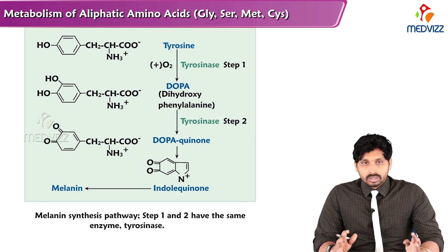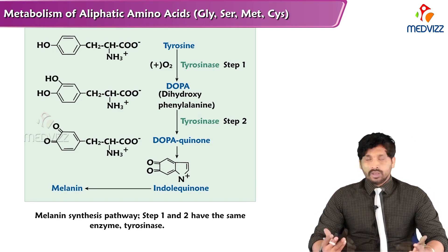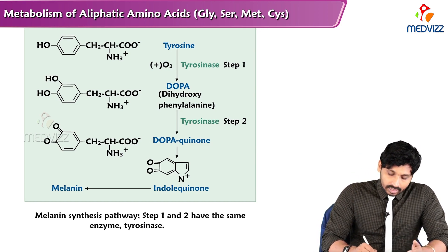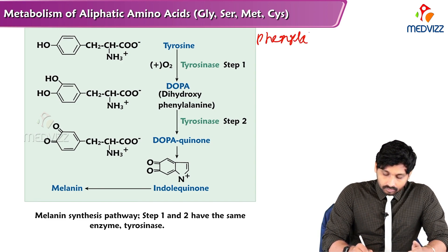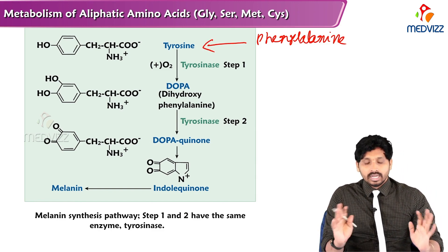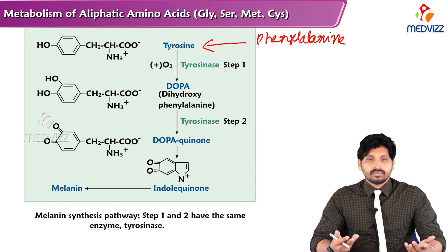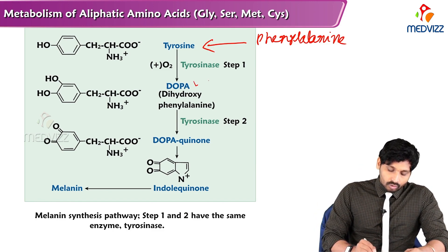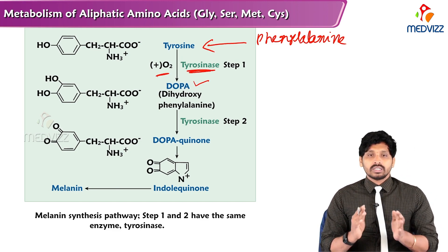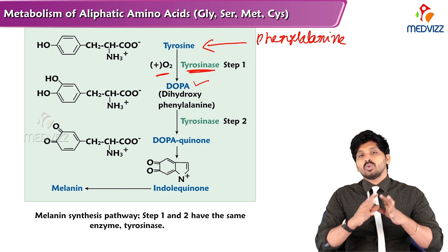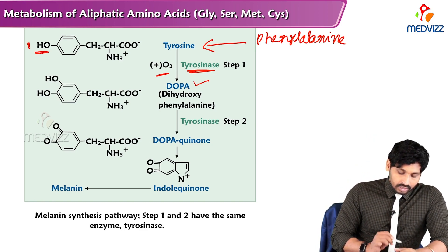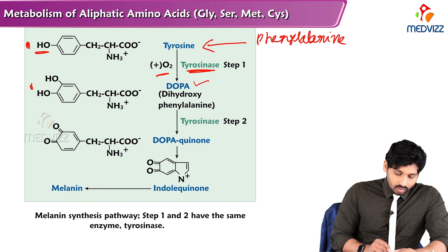Now we will see melanin synthesis first. Phenylalanine is converted into tyrosine by the enzyme phenylalanine hydroxylase. Then tyrosine is converted into DOPA by the enzyme tyrosinase, requiring molecular oxygen. DOPA is dihydroxyphenylalanine — tyrosine has a single hydroxyl group and DOPA has two hydroxyl groups.